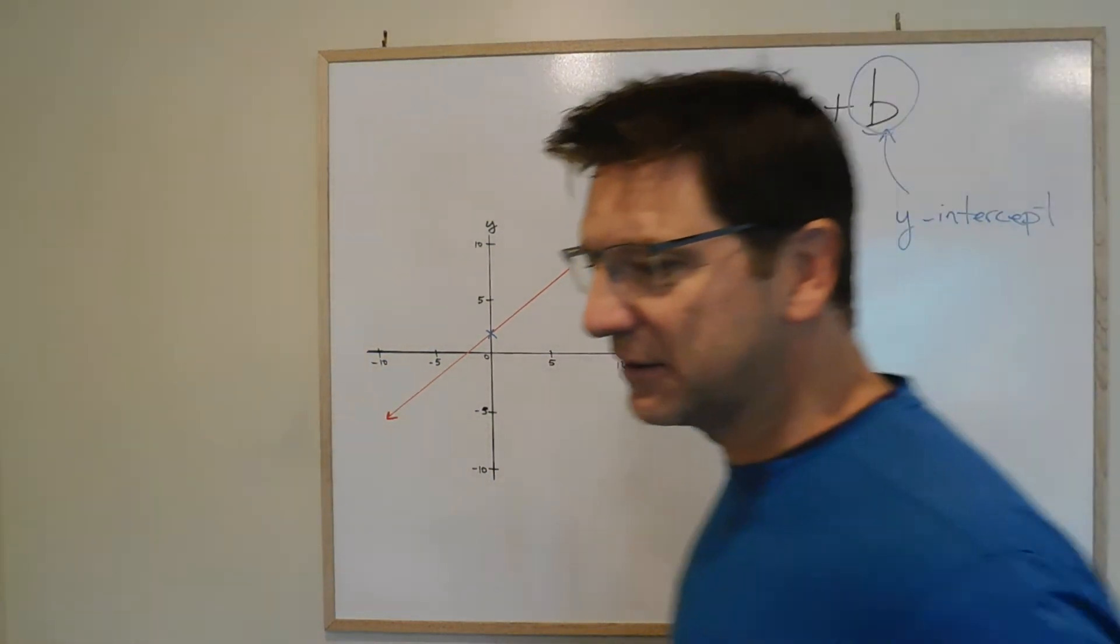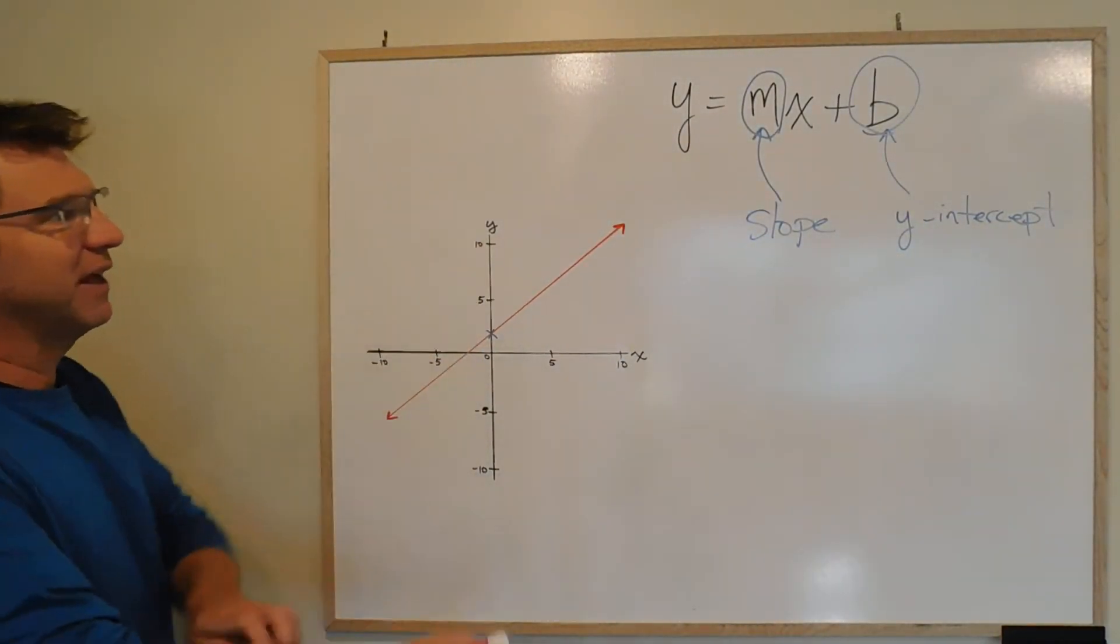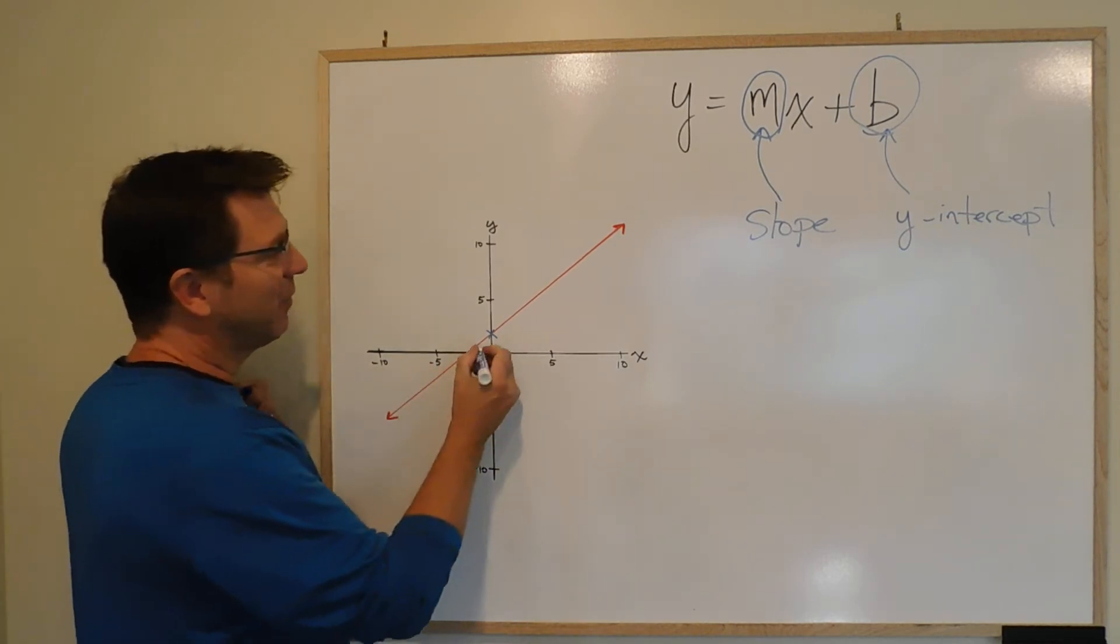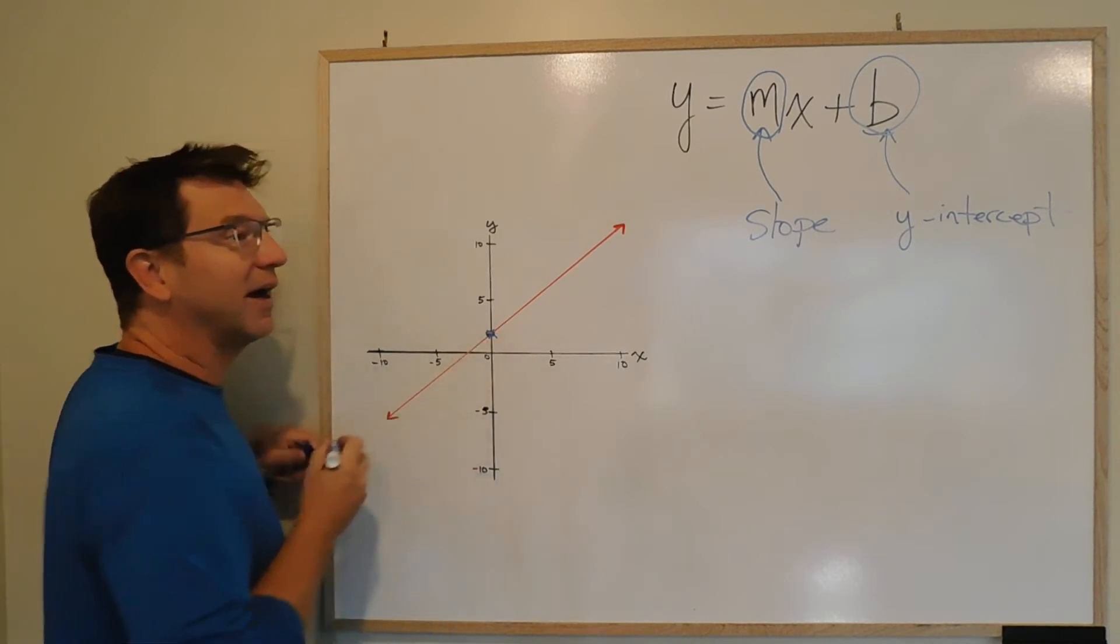Alright, just super quick here, x and y intercepts, because we talked briefly and I've left this up, what the y-intercept is. We talked briefly that the y-intercept is where the graph crosses the y-axis.